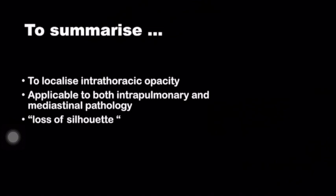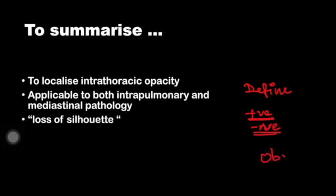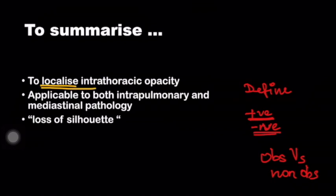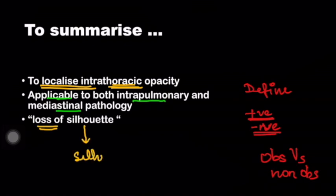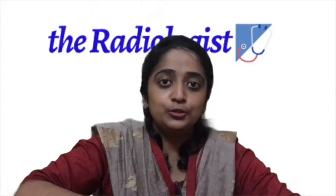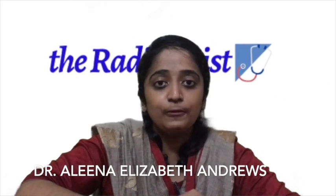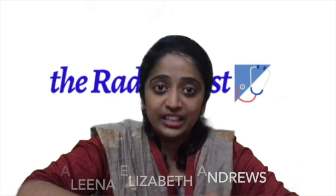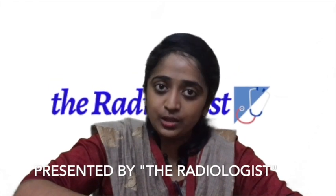To summarize: the Silhouette sign — we have learned to define it using the positive aspect as well as the negative value, that is obscuring versus non-obscuring. Its application in chest radiograph is to localize an intrathoracic opacity. Remember, by intrathoracic, it is applicable to both intrapulmonary as well as mediastinal pathology. Most importantly, the Silhouette sign refers to the loss of Silhouette — you are looking for the loss of the outline. I hope by the end of this video you are all familiar with the Silhouette sign and its use in localizing lesions on chest X-ray.